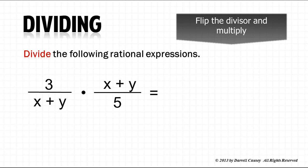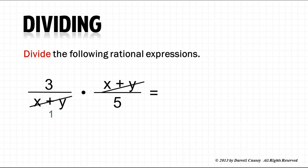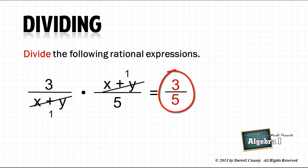Now, let's cancel anything out that we can. And 3 times 1 is 3. And 1 times 5 is 5. And there's our answer. Now, the key to getting good at these is to practice.